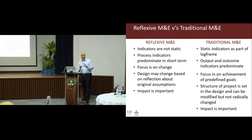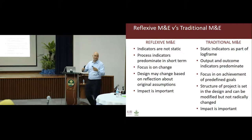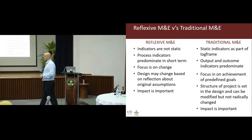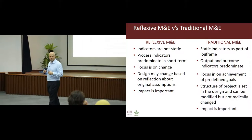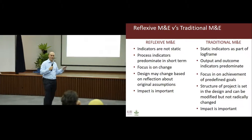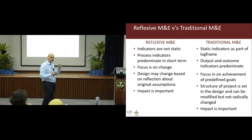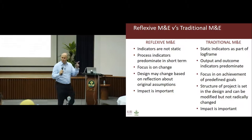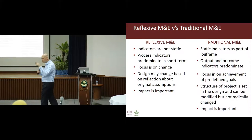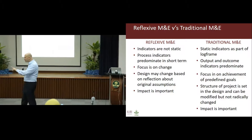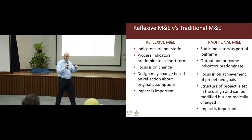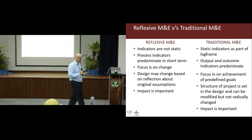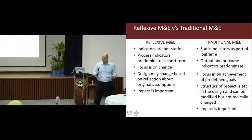Traditional M&E also focuses on achievement of predefined goals. So we have a five-year project, and we're supposed to look into our crystal ball. We don't know what we'll be wearing next week, we don't know what we'll have for dinner today — but we know what will happen over the next five years in a very complex agricultural system, and we can even tell you which indicators we'll use to count those, and they will not change over the next five years. You can see that I have a bit of skepticism about this.